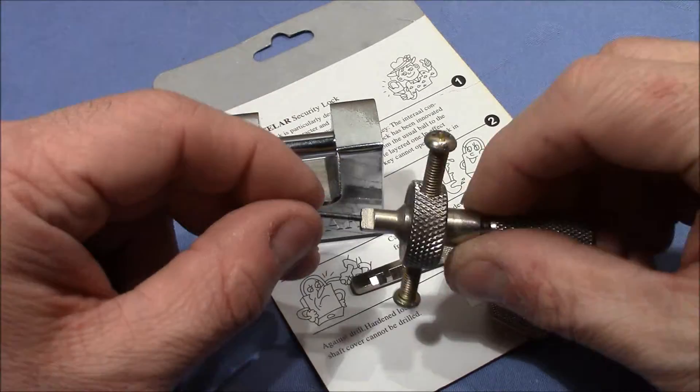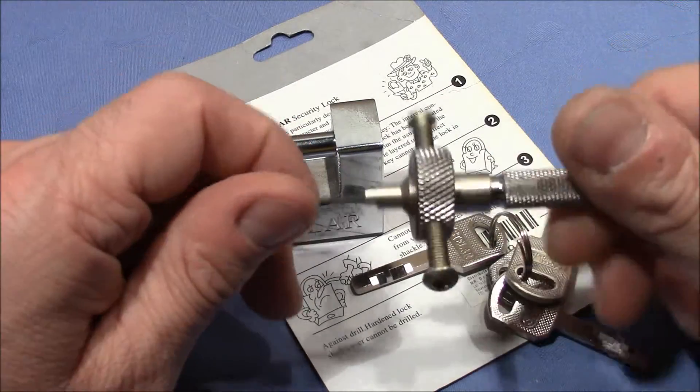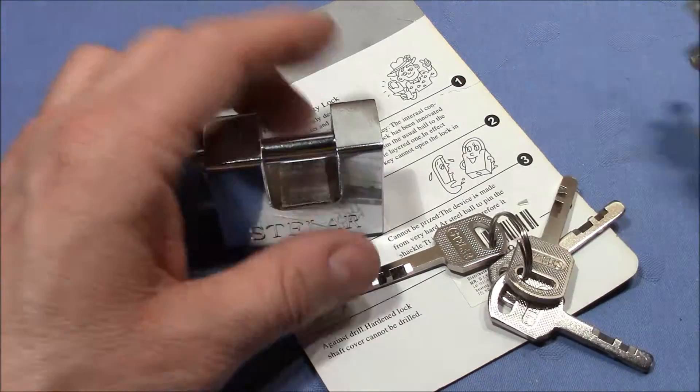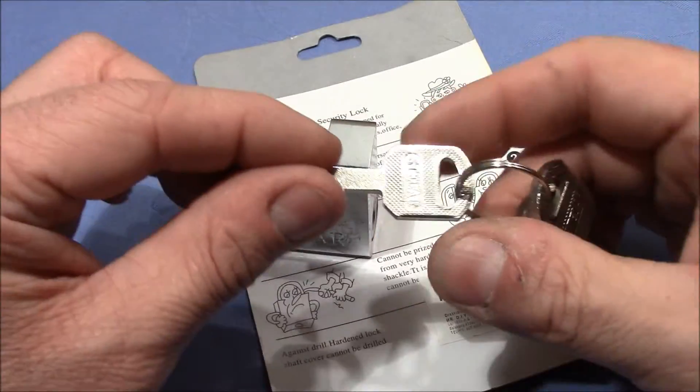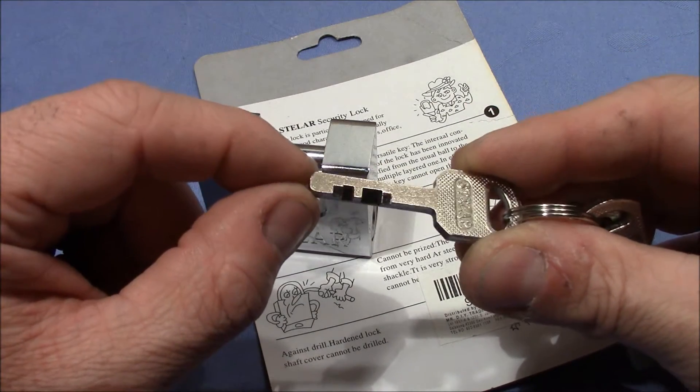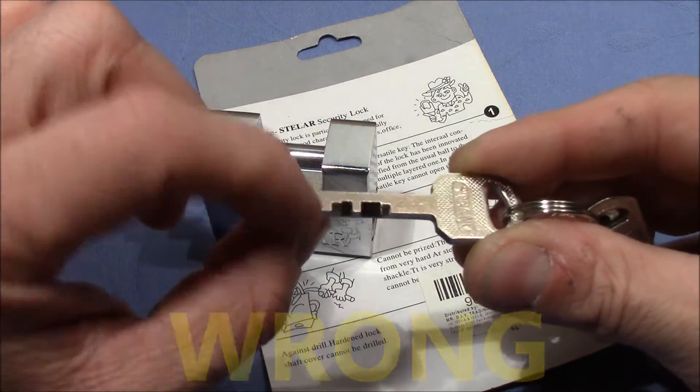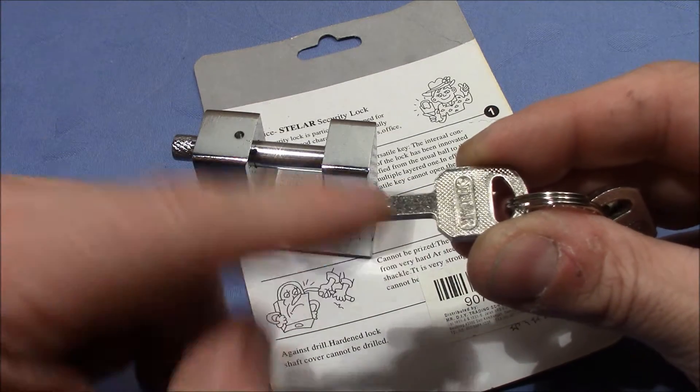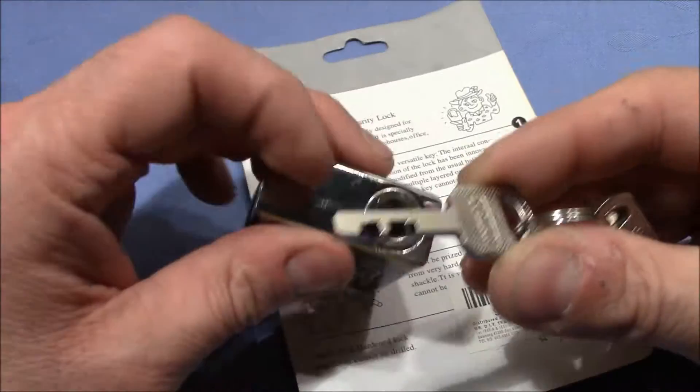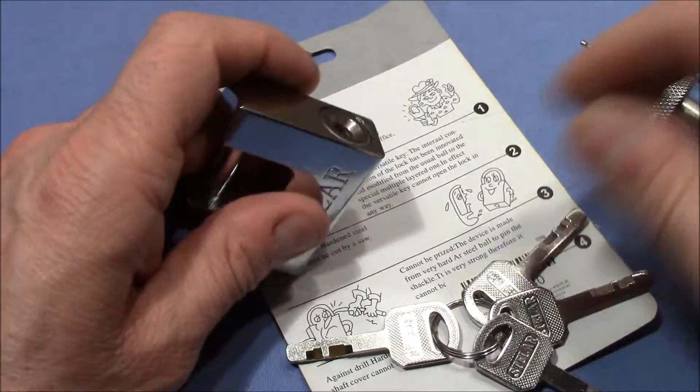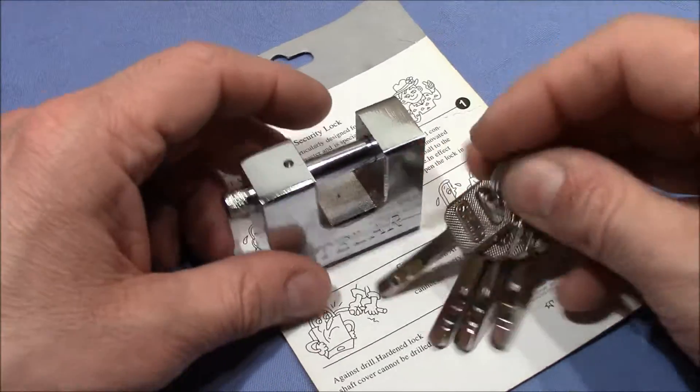I tried to pick it with this Chinese disc detainer pick, but first of all I'm not very experienced. I think it's a disc detainer lock that tensions from the bottom with this piece of the key because here we have cuts at the front. So I think you cannot pick it with this tool unless you are skilled like LockPickingLawyer, for example.